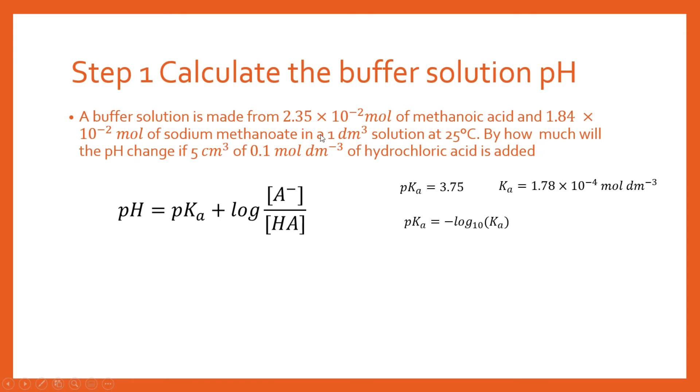We know that this is the conjugate base here, so we can just substitute our 1.84 times 10 to the minus 2 for the concentration of A⁻. So we can just substitute those values from the question in there, and when we evaluate this, and you ought to take care remembering that this is log to the base 10, substitute carefully at your calculator, and you'll end up with this value for the pH. So this is the pH for a buffer solution before we've added any acid to it.